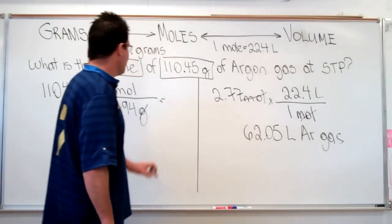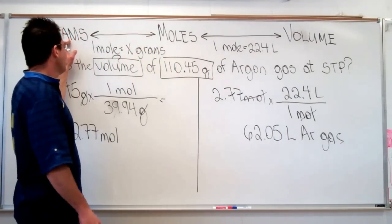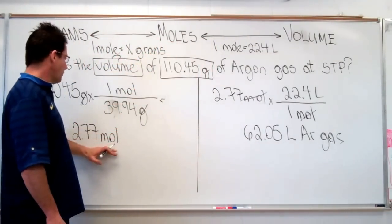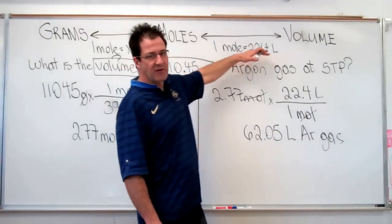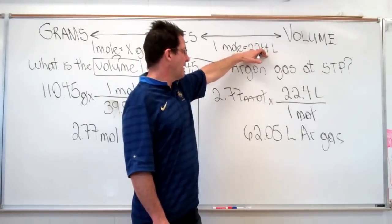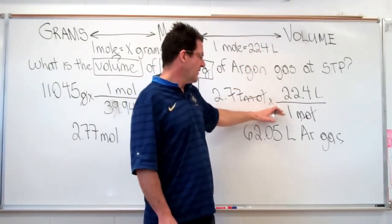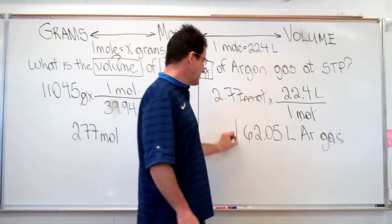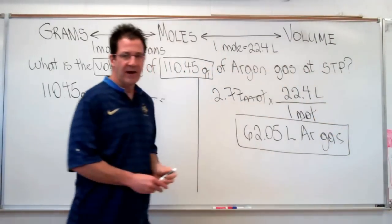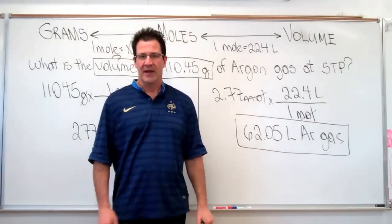So that's the answer. We started off with 110 grams. We went from grams to moles. We got 2.77 moles. Then we used our other conversion factor. And we went from 2.77 moles and we end up with 62.05 liters of argon gas.